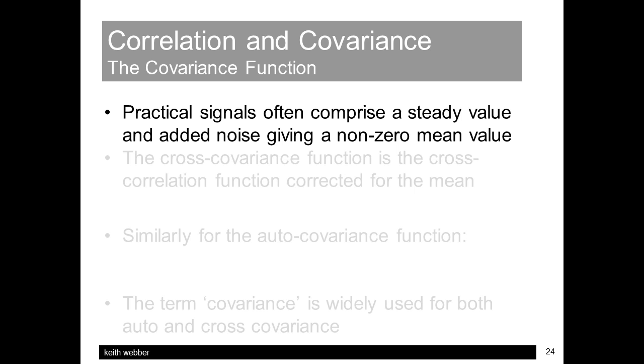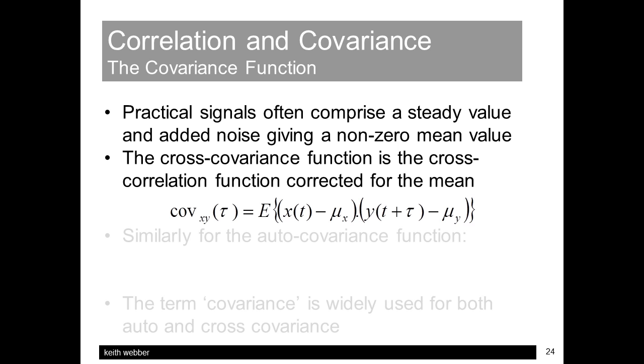So far, we've been concentrating on zero mean signals. However, in practice, noise is often superimposed on constant or relatively long-term values, such as a GPS location reading, for example. And to find the statistics in this case, the correlation function is extended to compensate for mean values mu x and mu y in the covariance function, defined as shown in the slide for both cross- and autocovariance, similar to correlation.